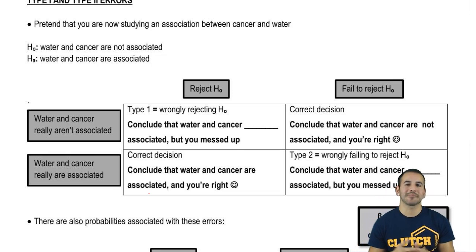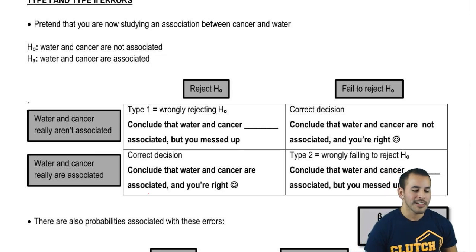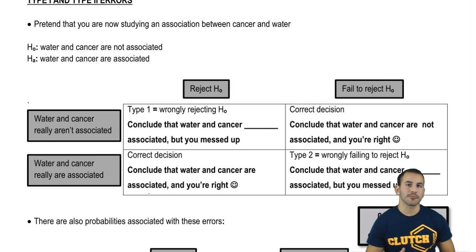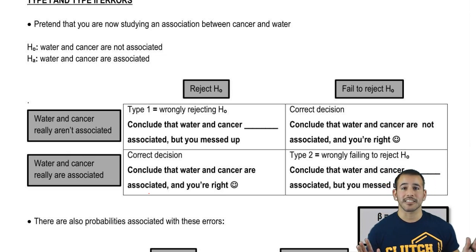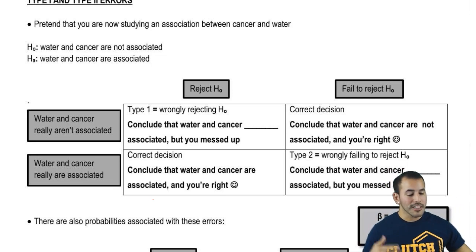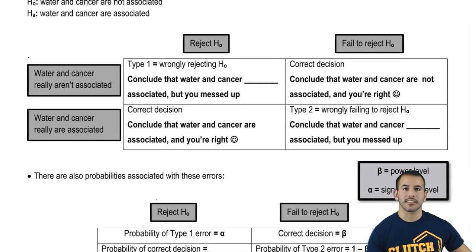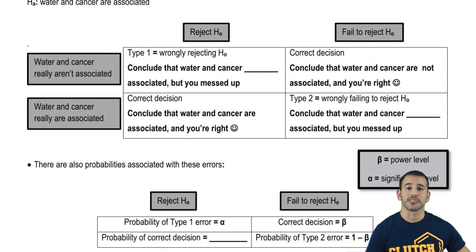If we talk about something irrelevant, it doesn't make as much of an impact as showing something really extreme. So here our alternate — we're testing to see that cancer and water are associated, which would have huge implications health-wise across the whole world. So our null is that they're not associated, and our alternate is that they are associated, which again is a crazy claim.